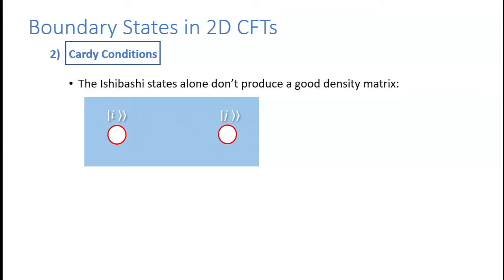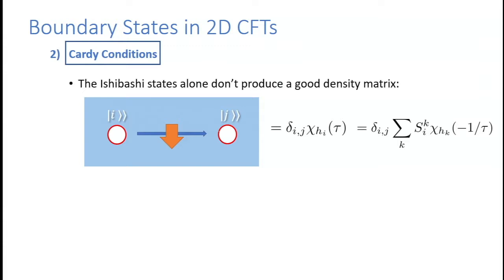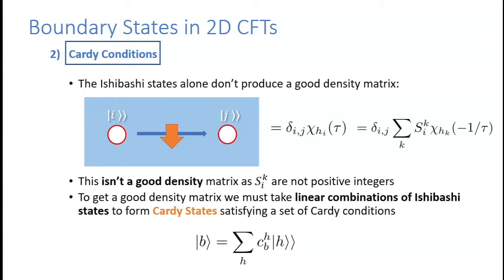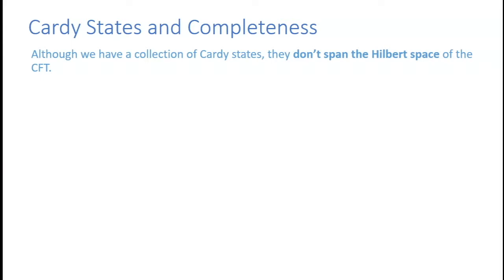To satisfy positivity, there are Cardy conditions. Inserting two Ishibashi states on the endpoints and evolving in time gives a Virasoro character; viewing in the other channel via an S-transformation maps this character into a sum of characters in the other channel. The coefficients are not generically integers, so this is not generically a good density matrix. I need to take specific linear combinations of Ishibashi states — called Cardy states — to get positive integer coefficients and thus a good density matrix.